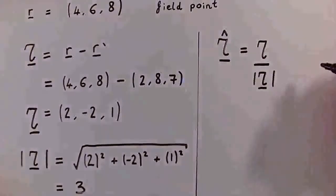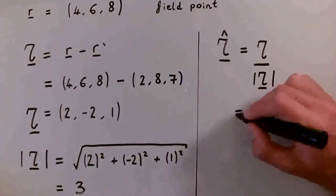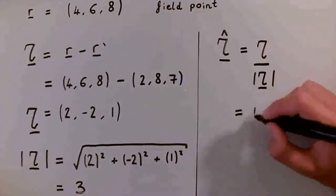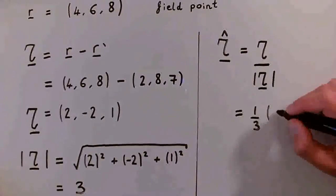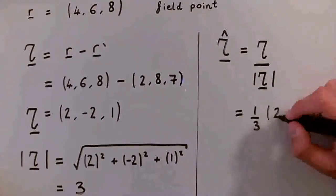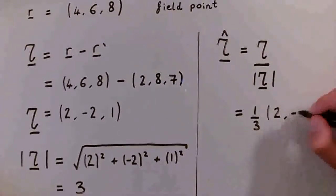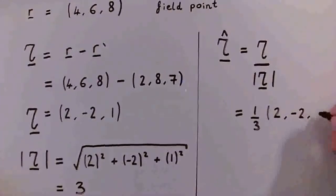And both of these we've already worked out, so it's just 1 over 3 times (2, -2, 1).